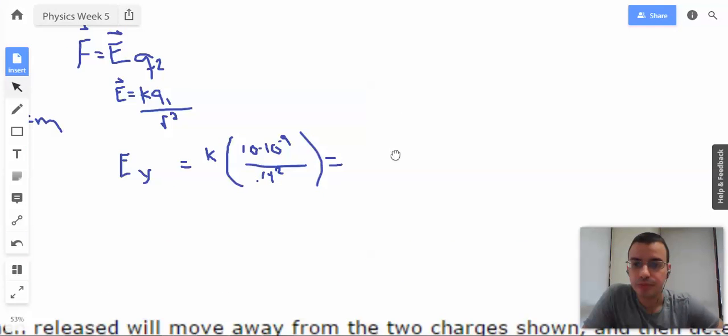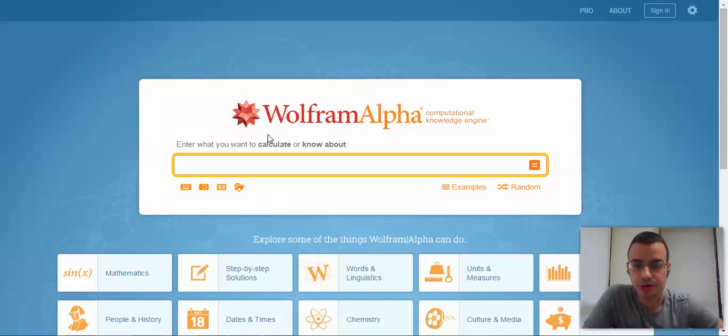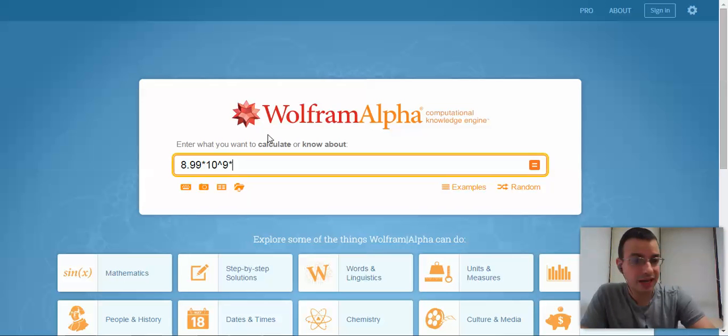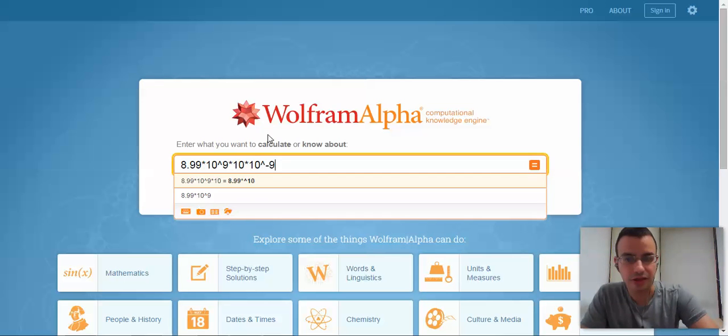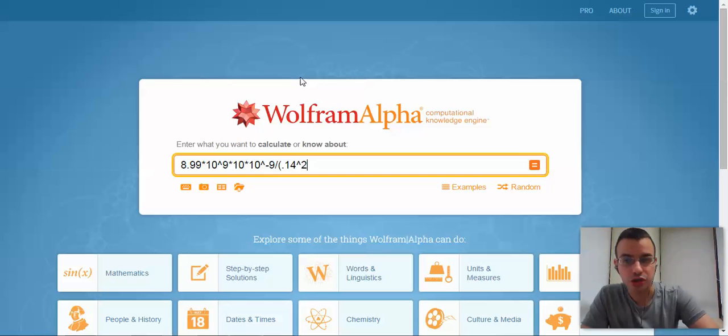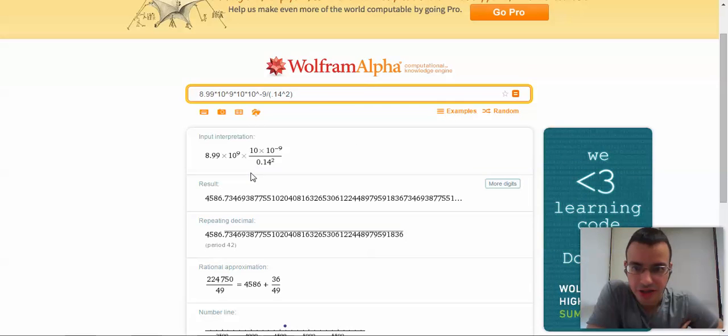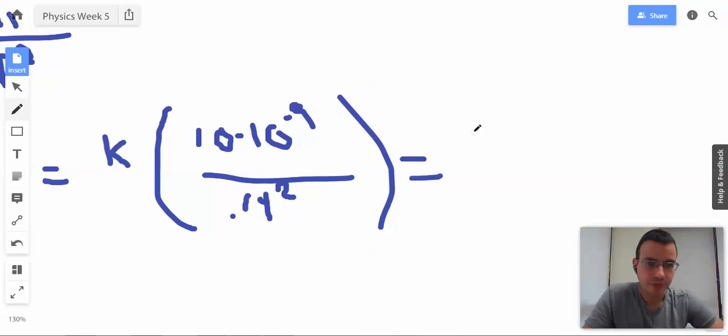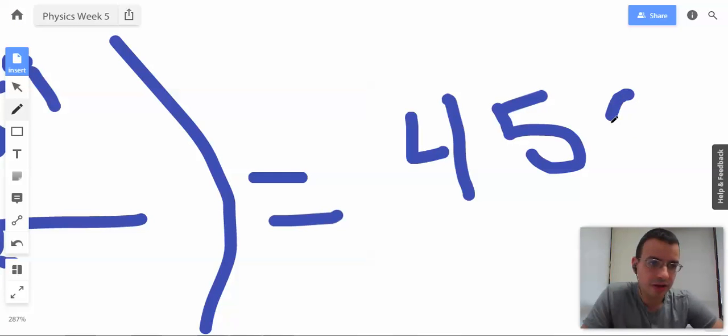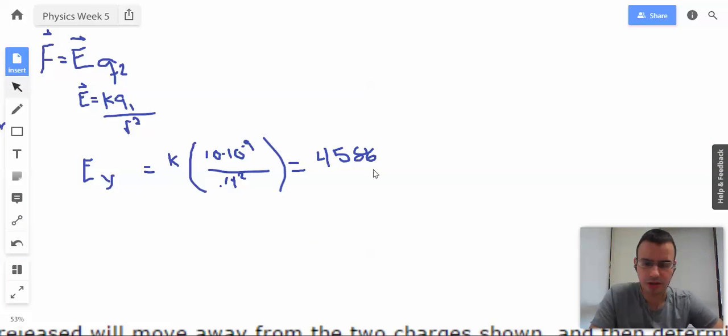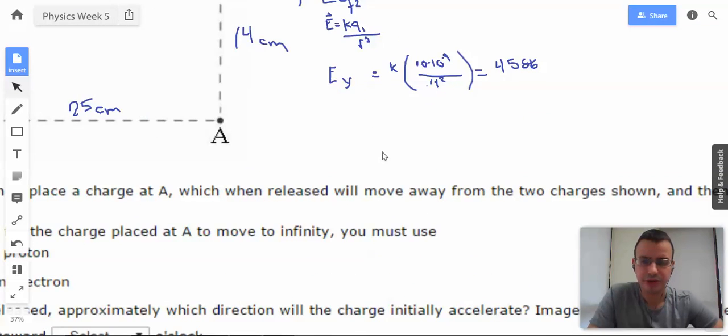And I'm going to call this Q here 10 times 10 to the negative 9th, and the distance between them will be 0.14. So 8.99 times 10 to the 9th times the charge which is 10 times 10 to the negative 9th divided by 0.14 squared. And that gives us 4586 newtons per coulomb.